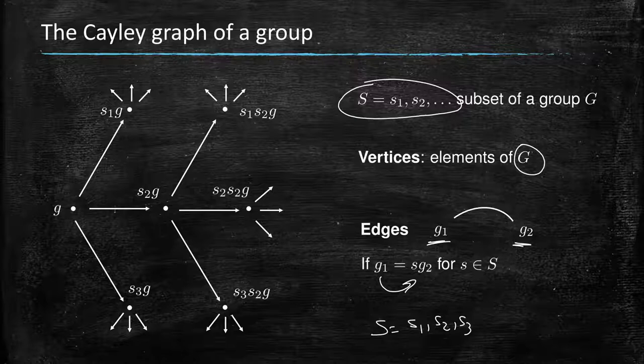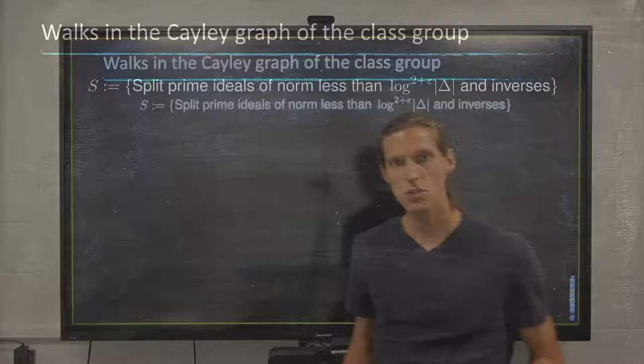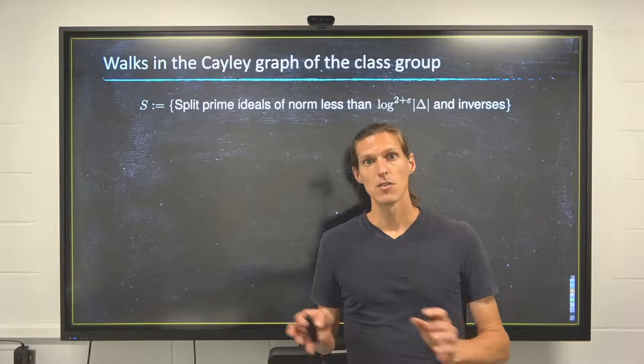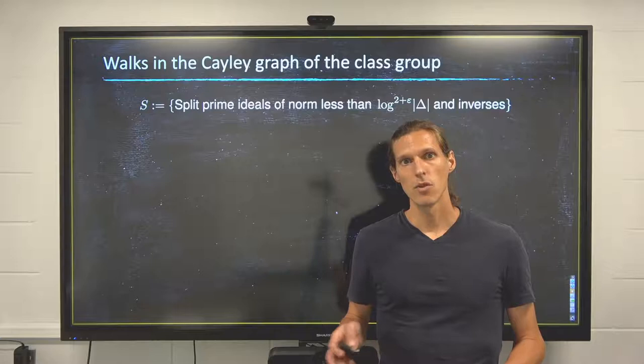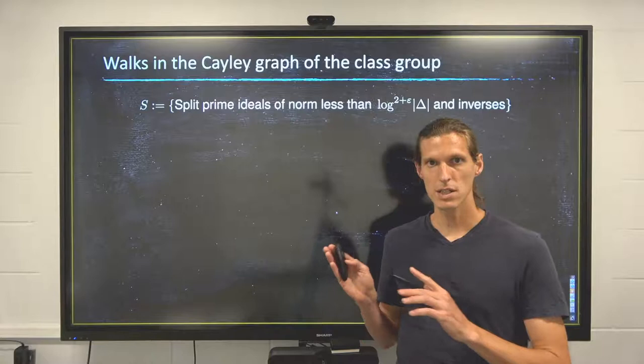That is for a generic group. Now what could it look like in the ideal class group? First you need a generating set S for the group you're considering. We've seen before that under a generalization of the Riemann hypothesis, the classes of the primes of norm less than 12 log square delta would generate the ideal class group.